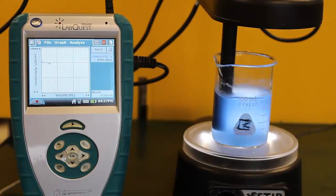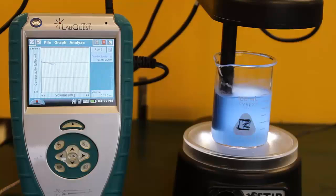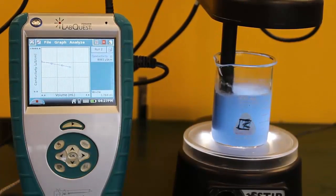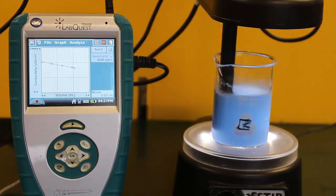The barium hydroxide solution is blue because bromthymol blue indicator has been added to it. Here we're running the video at 400 percent speed so that you can see the experiment more quickly.